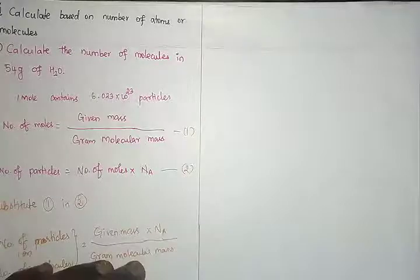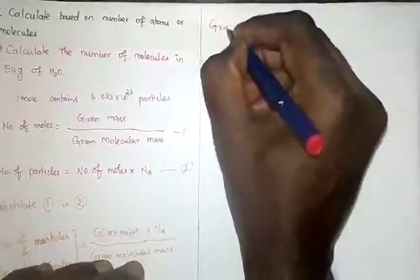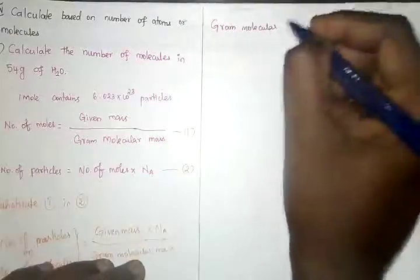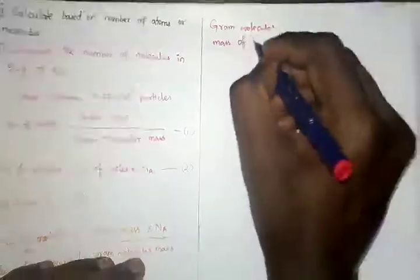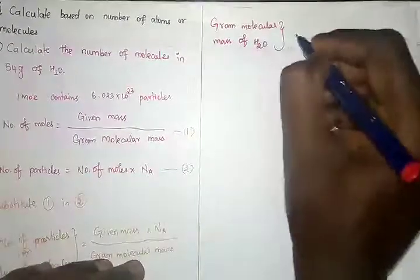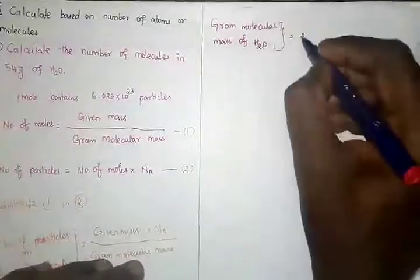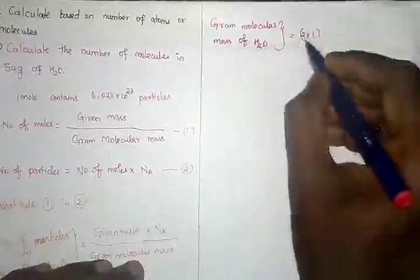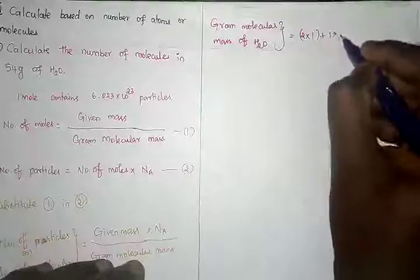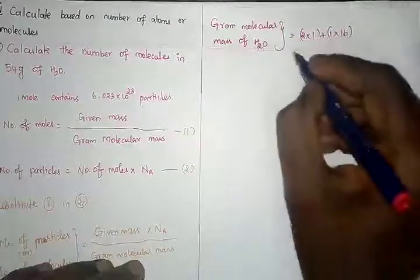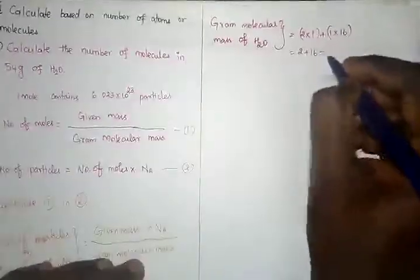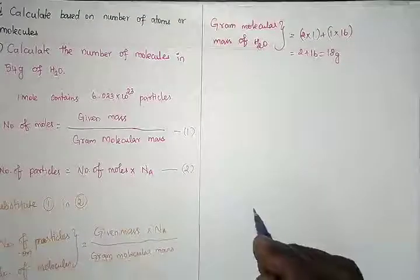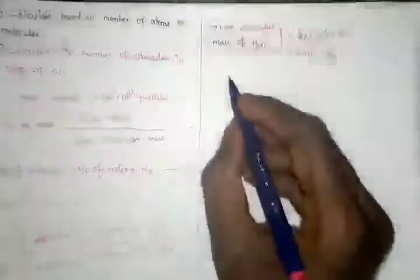The gram molecular mass of water equals 2 × 1 (hydrogen, atomic mass 1, with 2 atoms) plus 1 × 16 (oxygen, atomic mass 16). So 2 + 16 = 18 grams per mole. Now we have all the required values for the calculation.